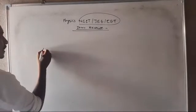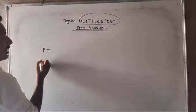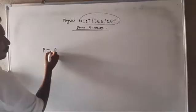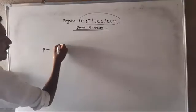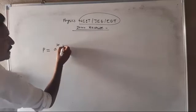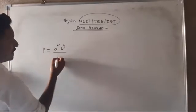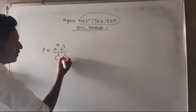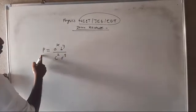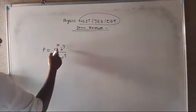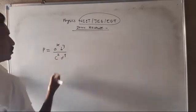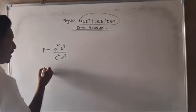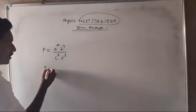Now, P is a quantity. What is P? P equals A raised to X, B raised to Y, C raised to Z, and D raised to Z. This is the expression we want to expand for the student.